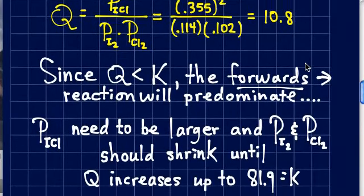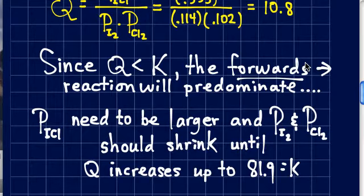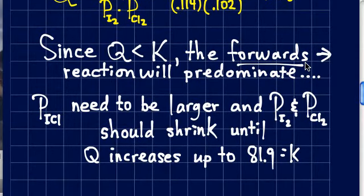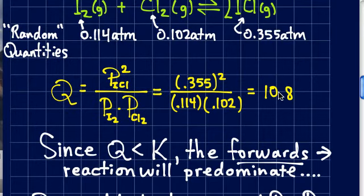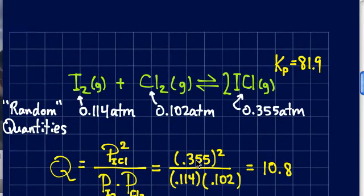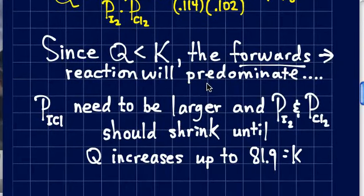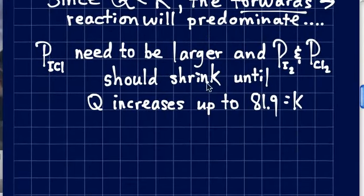Since Q is smaller than K, the forward reaction will predominate. We'll get a lot of forward and a little backwards. Of course, the closer and closer this 10 grows larger, this number goes larger, these numbers grow smaller up to 81.9. The closer this gets to this and the more reverse reaction picks up till eventually when I get exactly Q equal to K, then my forwards and backwards rates become equal once again. This equilibrium is a crazy idea. Very abstract.